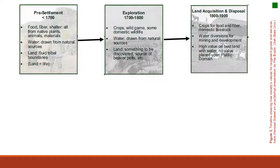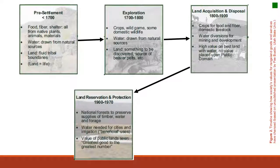In the 1800s and 1900s this was the time of land acquisition and disposal. Think back to the Homestead Act — people established homesteads near water, which increased agricultural production for food and fiber and brought over domesticated livestock. In the 1900s through the 1970s, we shifted management focus toward more land preservation and reservation: national forests, national parks, and national monuments were established as we sought to better understand how to manage our natural resources.